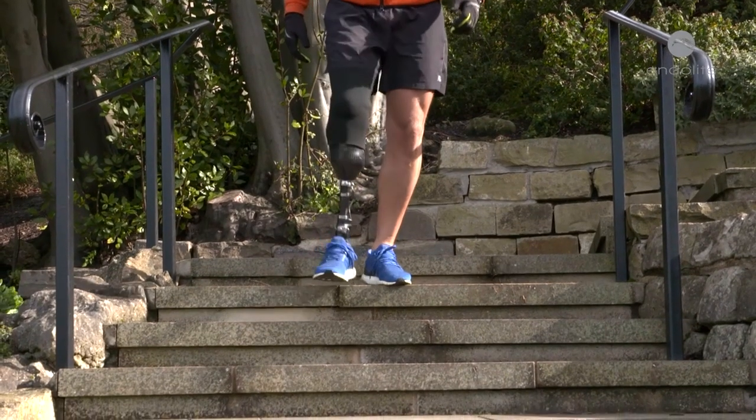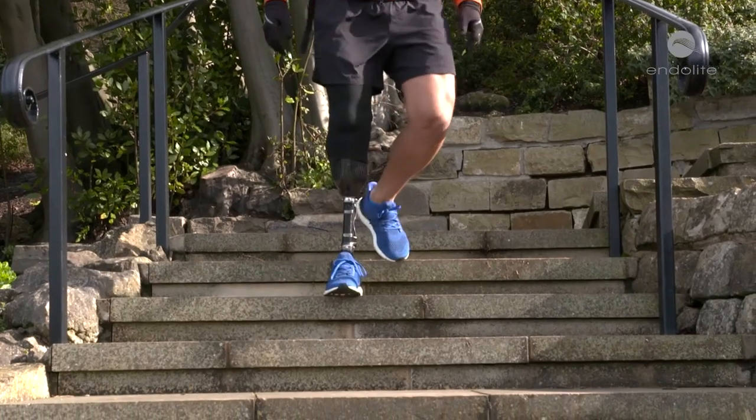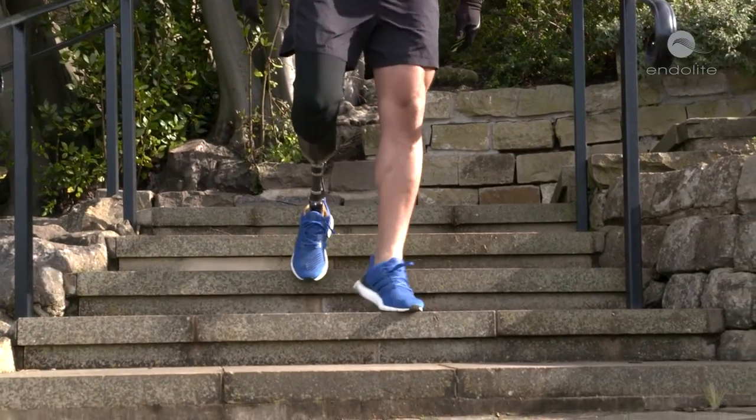The Echelon VAC combines the benefits of an elevated vacuum system with a hydraulic ankle. It's lightweight, has low build height, doesn't require batteries, and is quick and easy to fit.